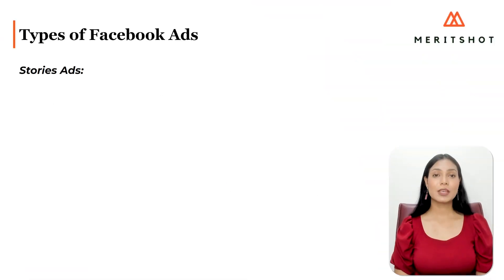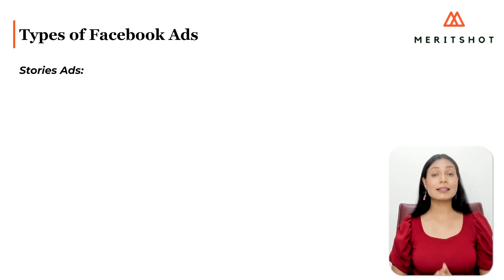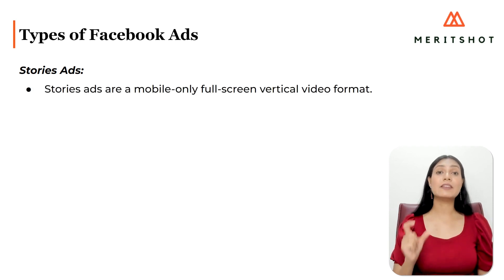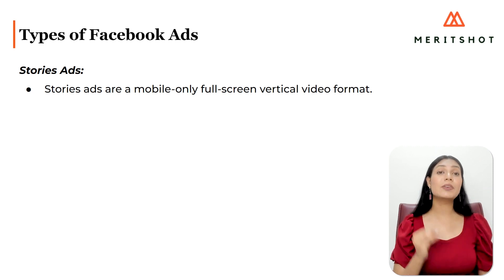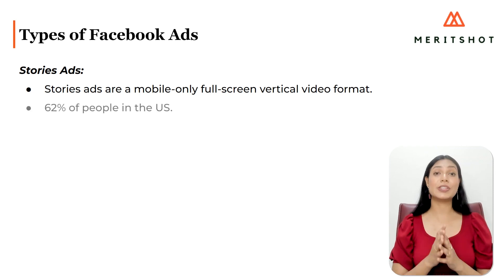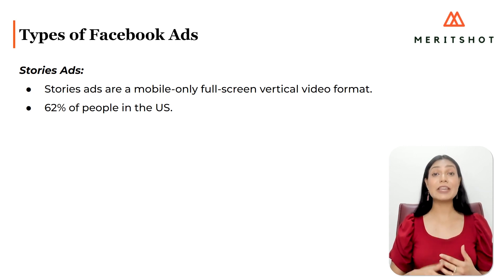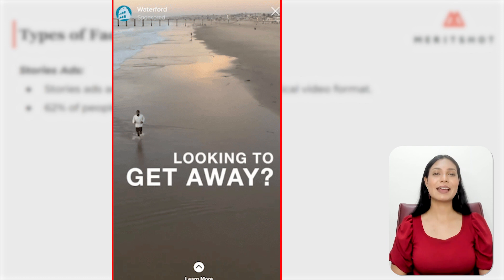Stories ads — mobile phones are meant to be held vertically. Stories ads are a mobile-only, full screen vertical video format that allows you to maximize screen real estate without expecting viewers to turn their screens. Right now, 62% of people in the U.S. say they plan to use stories even more in the future. Stories can be made up of images, videos, and even carousels. Here is an example of a video made into a story ad.